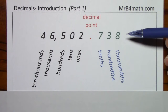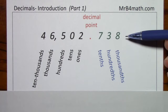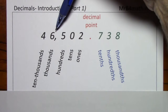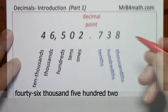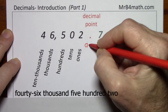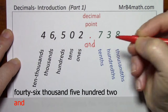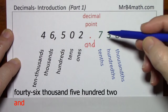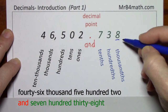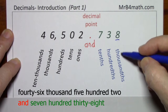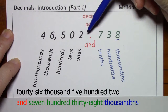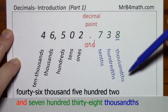If we're given this value and we're asked to say or write the number in words, you would identify this as forty-six thousand five hundred two. We identify the decimal point with the word AND. Then for the decimal part, you say the number seven hundred thirty-eight. The last thing you do is identify the place value of the last digit, which is thousandths. So this is forty-six thousand five hundred two and seven hundred thirty-eight thousandths.